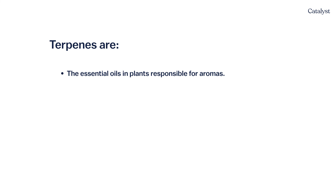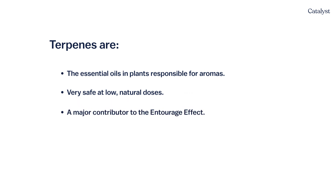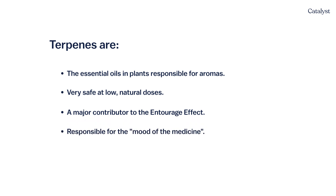To recap: terpenes are aromatic compounds responsible for the unique scent of each plant. Although most evidence is still pre-clinical, terpenes have been utilized in herbal medicines for thousands of years, and a growing body of research provides substance to the theory that they contribute heavily to the entourage effect — the mood of the medicine. Terpenes are generally well tolerated and should be used within the dosages found within the plants, until we have evidence to suggest otherwise.